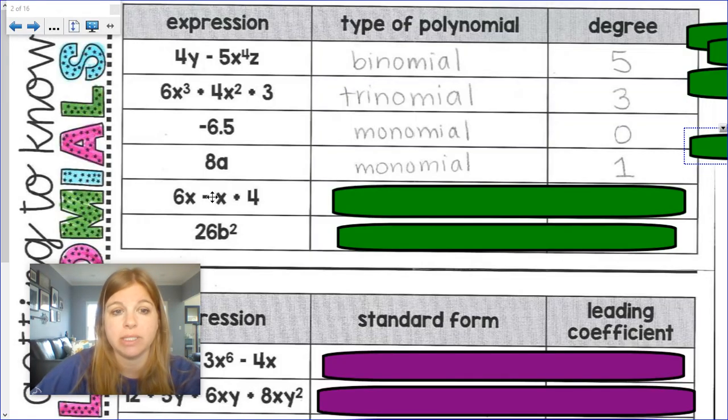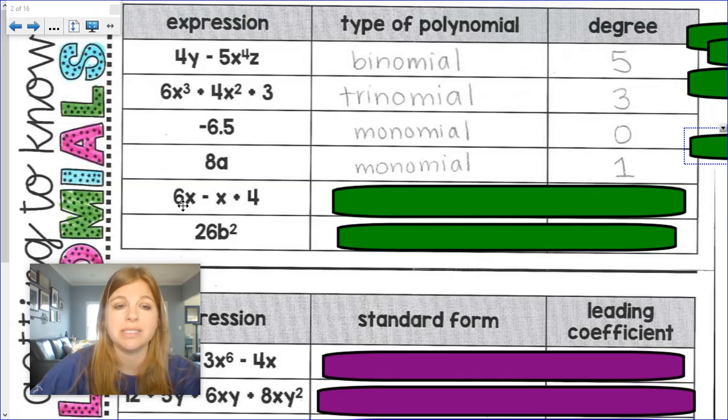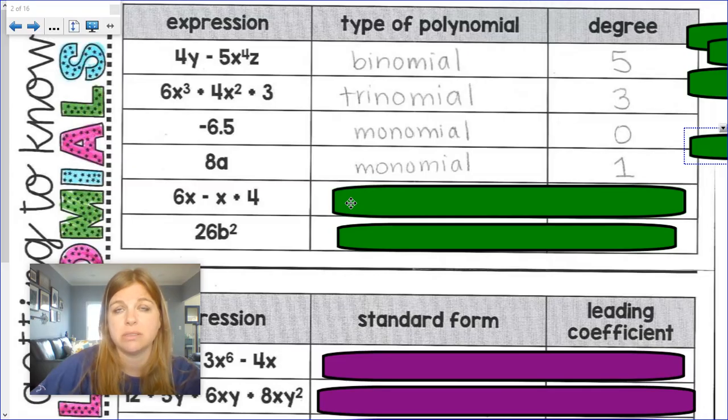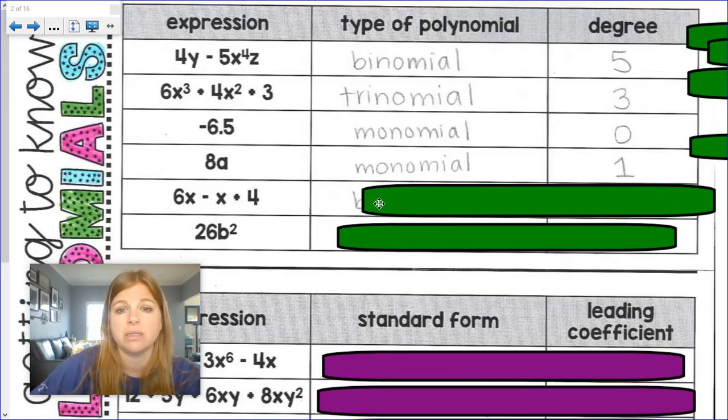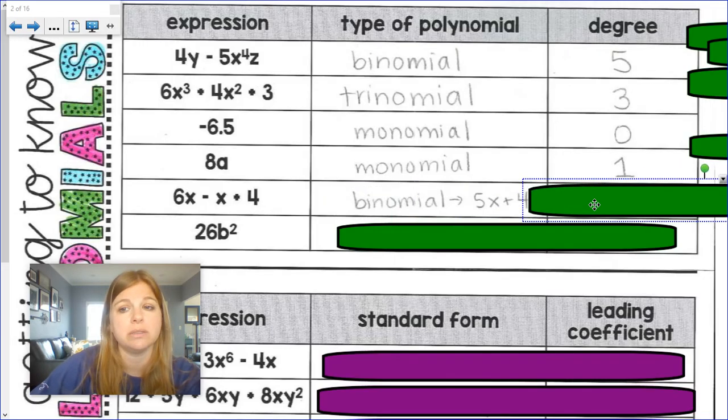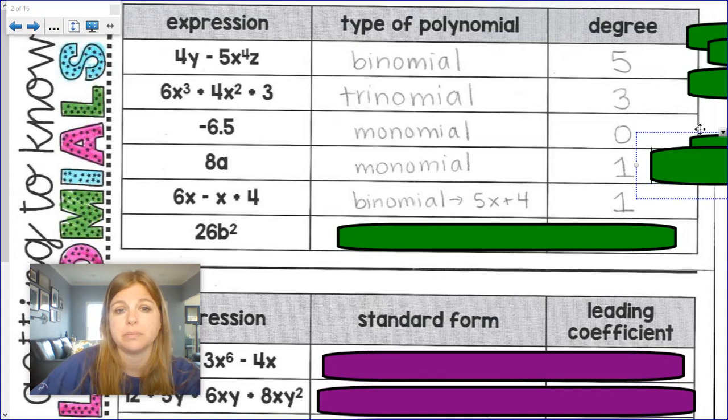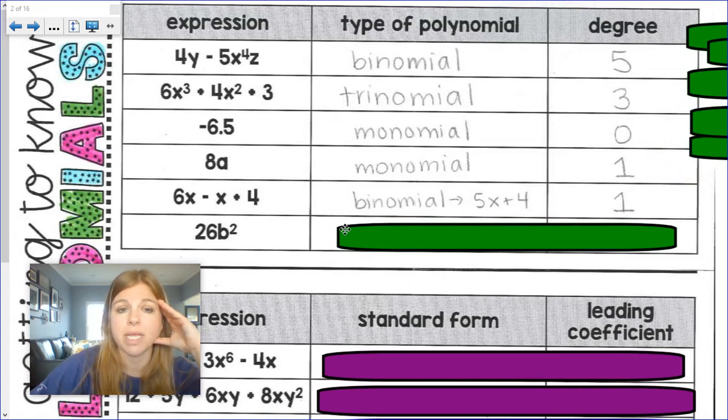Now watch out for this next one. 6x minus x plus 4. 6x minus x. Six oranges minus an orange is 5 oranges. So 6x minus x plus 4 really is 5x plus 4. 5x plus 4 is really a binomial. Has a degree of 1.